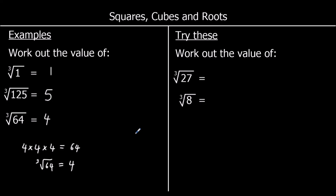Two more questions — pause the video, give them a go, then press play when you're ready. The cube root of 27: what number times itself and then times itself again makes 27? That's 3, because 3 times 3 times 3 makes 27. And the cube root of 8 is 2, because 2 times 2 times 2 makes 8.